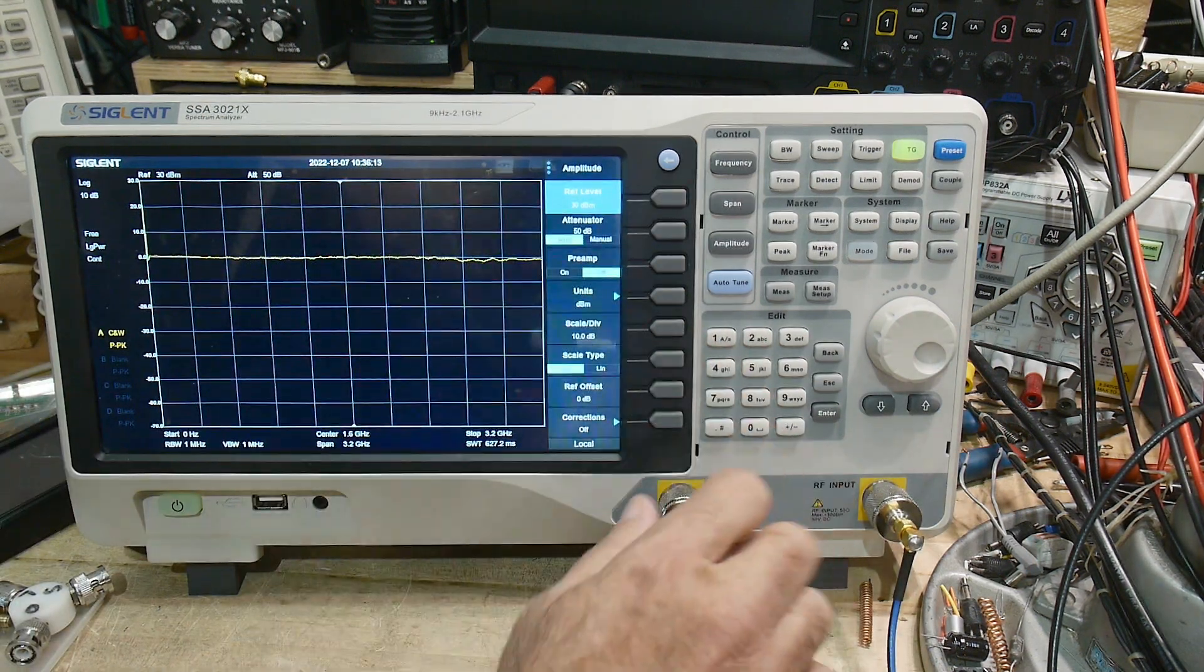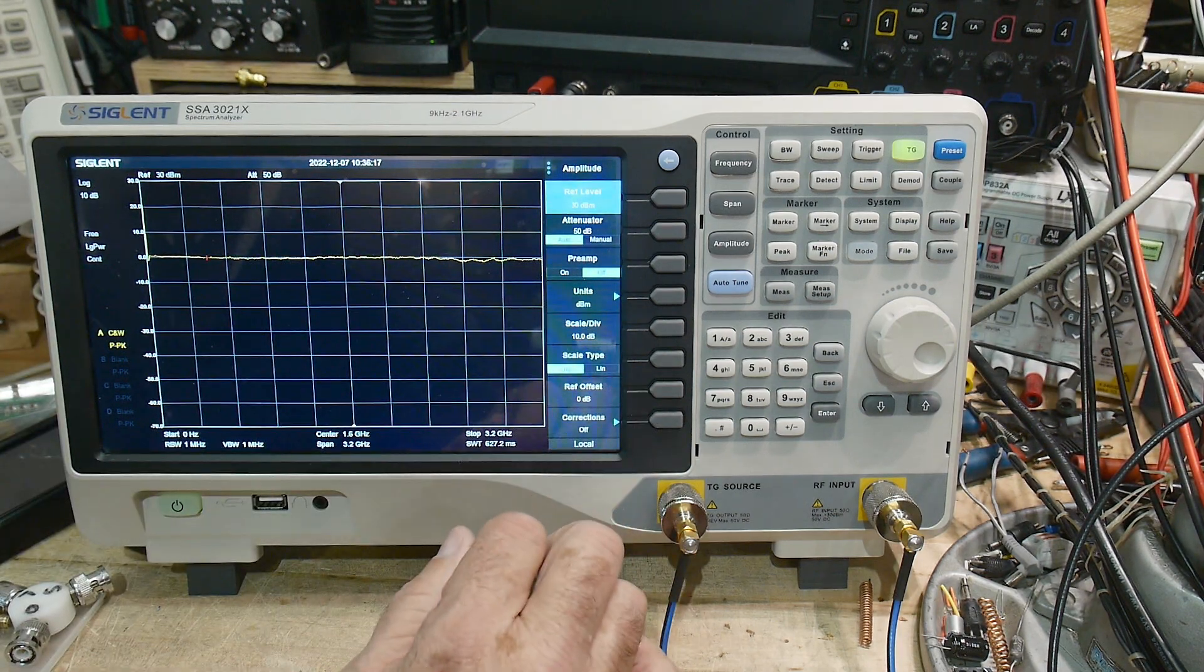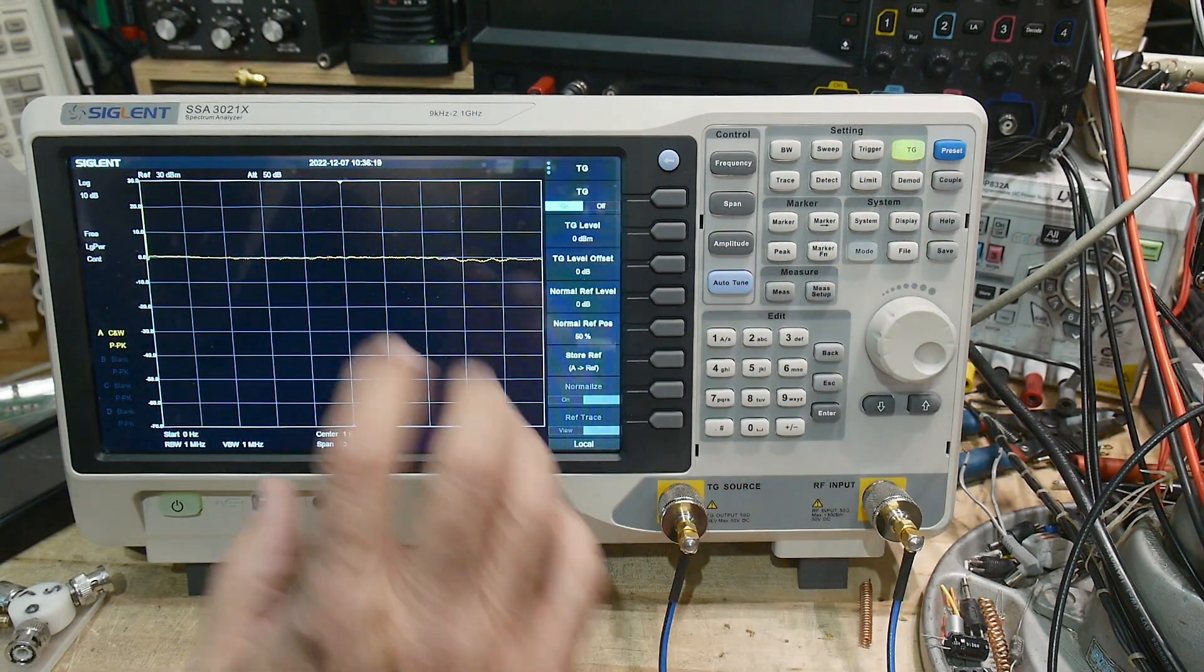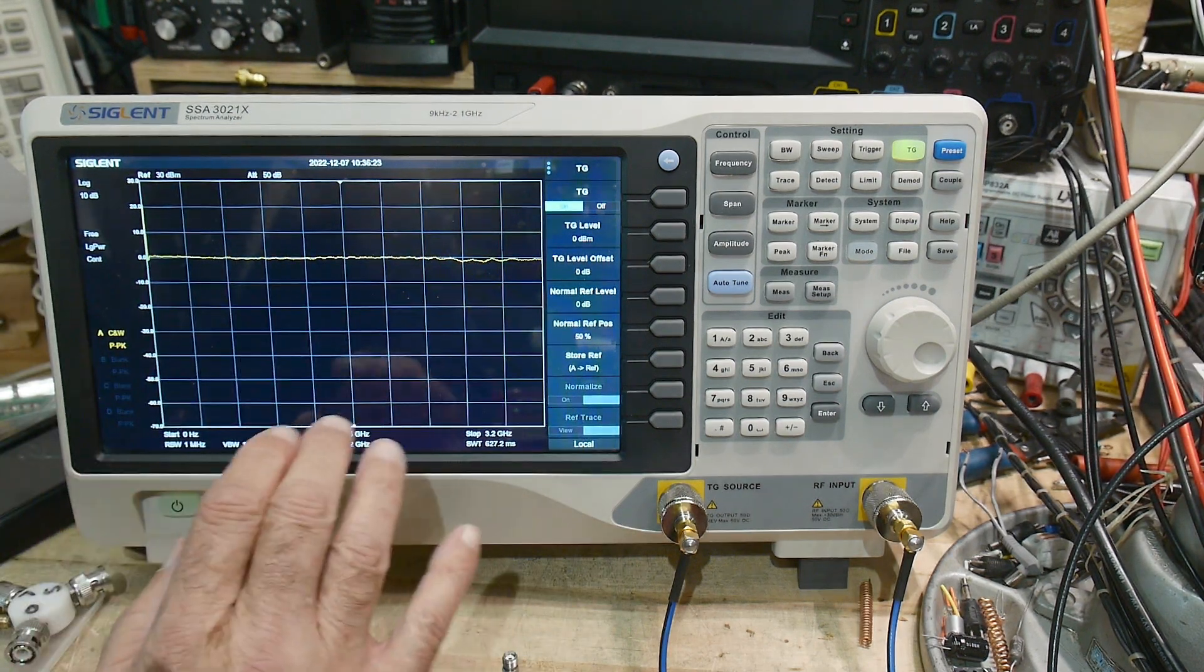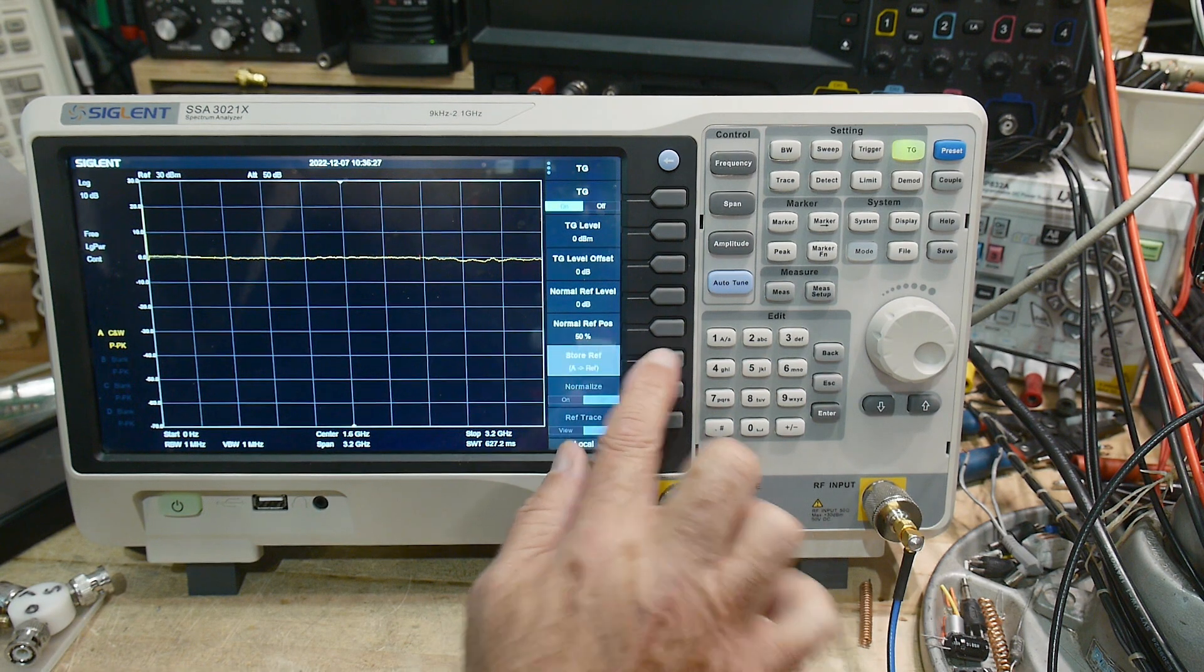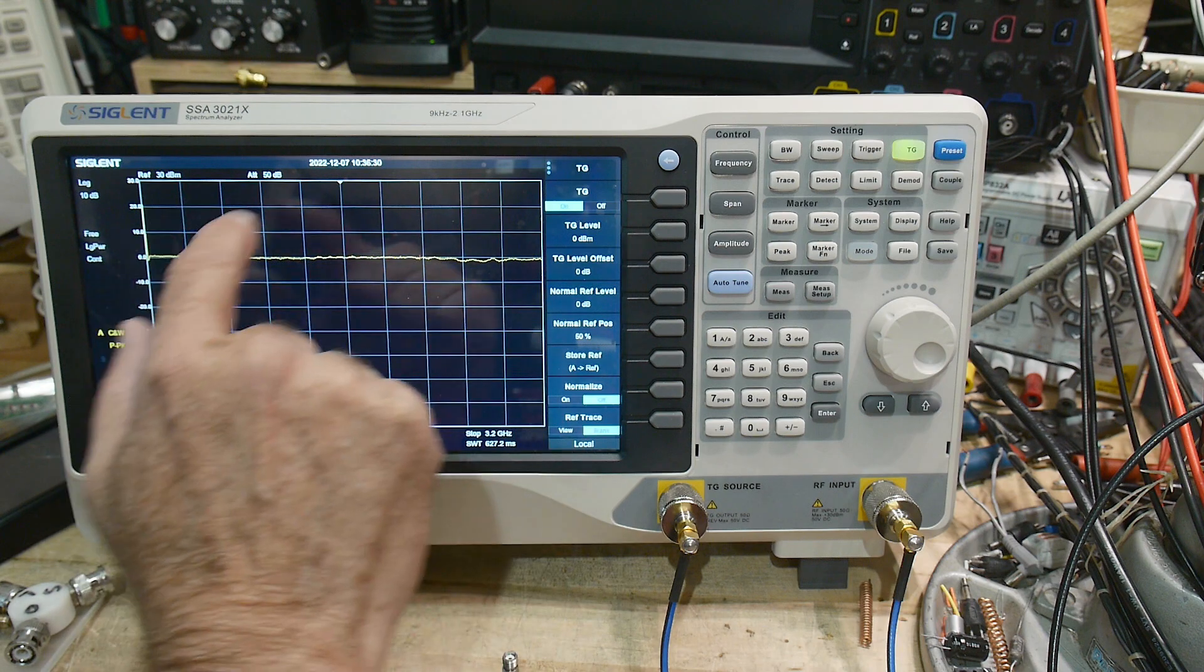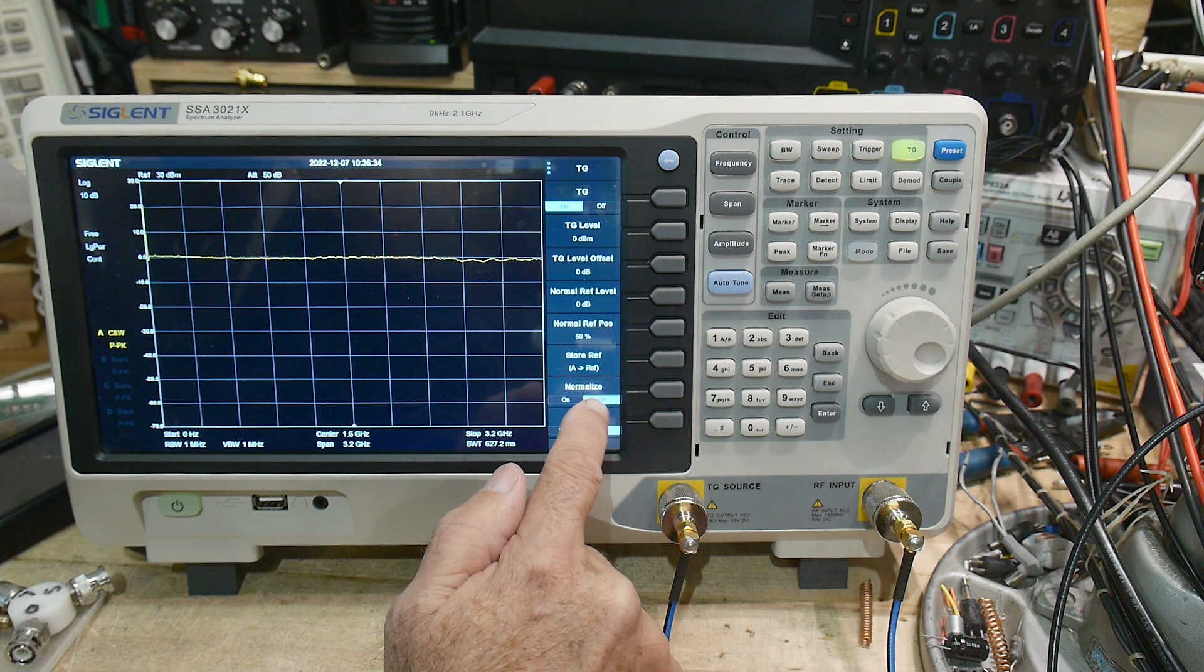It's fairly flat, it wiggles maybe a little bit out here, but we want it absolutely flat. We want an accurate measurement. On our tracking generator, we can normalize the tracking generator. The way that we normalize that, we say store to reference. Now what that just did was it took this waveform and it stored it in memory, and then we can hit the normalize button.